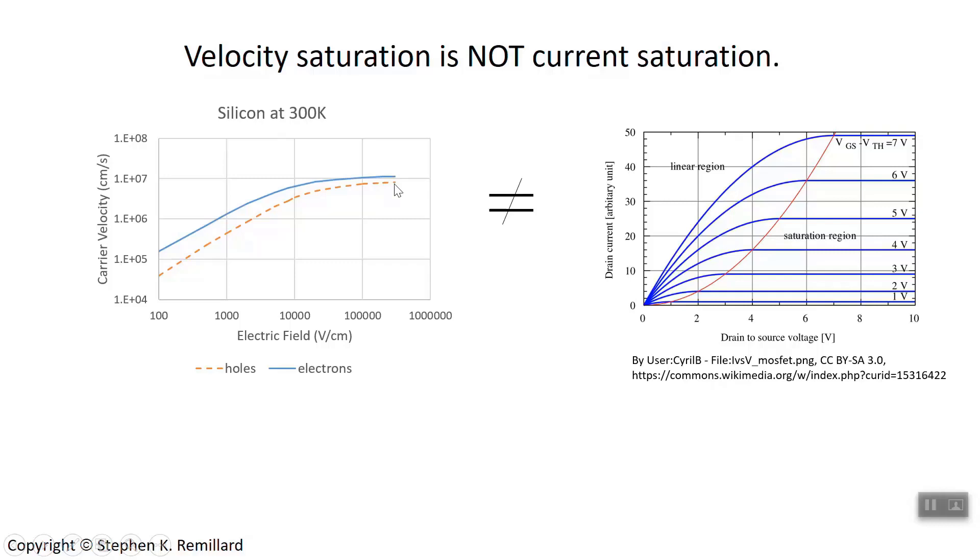Last time we talked about the I-V characteristic of a MOSFET and it looks like this. This is the drain-source current versus the drain-source voltage, and each one of these curves is for a different gate voltage. But it levels off at some voltage and we can even draw a parabola through the voltages where it levels off. That's the parabola that describes the saturation voltage. So V_Dsat, the drain-source voltage at saturation, is given by where this red curve intersects each one of these characteristic I-V curves and then you're in saturation.